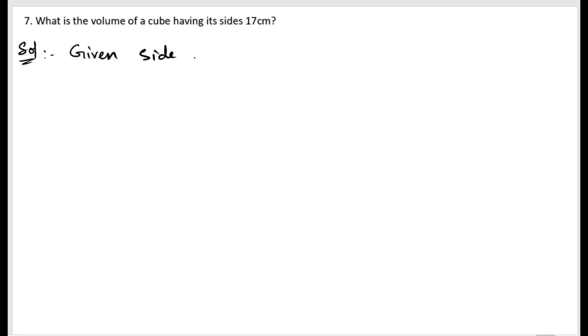Side of a cube equals 17 centimeter. Next, we know the volume of a cube formula, so let us write down that. Volume of a cube equals side cubed.